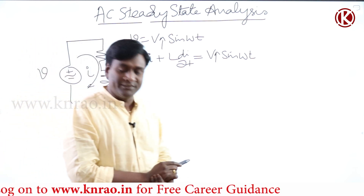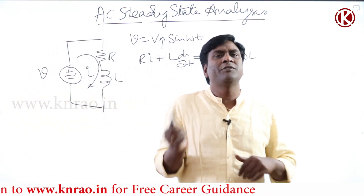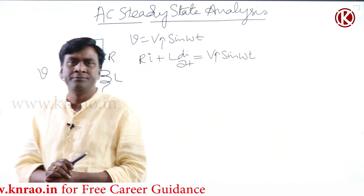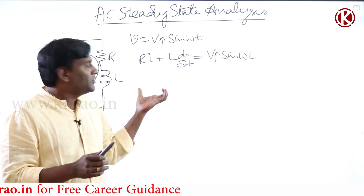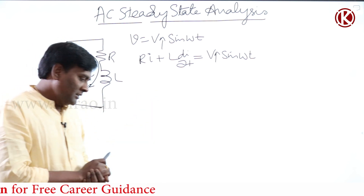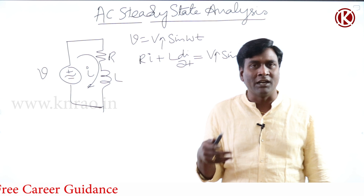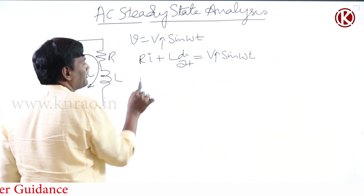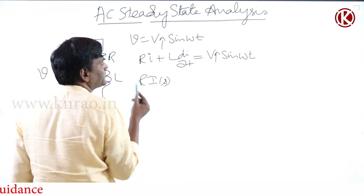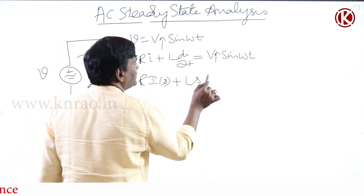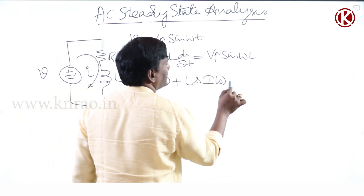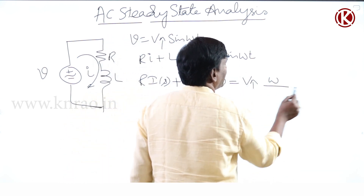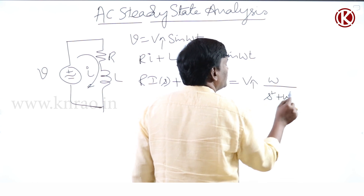Even though it is a first-order differential equation with only one energy element, getting the current directly in the time domain is difficult. So let us convert it into Laplace transform: R·I(s) + L·s·I(s) = V_max · ω/(s² + ω²).